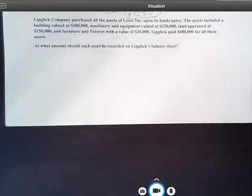It says, Lipglick Company has purchased all the assets of Loser Incorporated upon its bankruptcy. The assets included a building valued at $500,000, machinery and equipment valued at $330,000, land appraised at $150,000, and furniture and fixtures with a value of $20,000. Lipglick paid $680,000 for all these assets. At what amount should each asset be recorded on Lipglick's balance sheet?